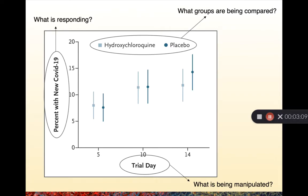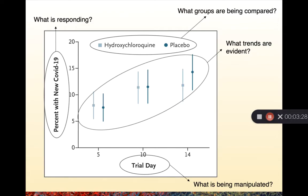We're looking at what is responding — what is responding to what is being manipulated. In this case we have the percent of new patients with COVID-19. Now we can dig into the meat of the figure and understand what trends are evident. As we increase in trial day, the number of COVID-19 patients goes up, but critically there's no difference between the two groups being compared. There's no strong upward or downward trend separating those who received hydroxychloroquine and those who received placebo.